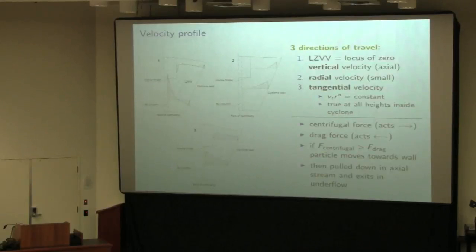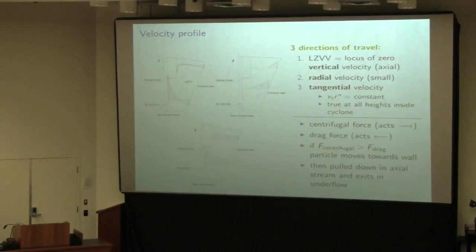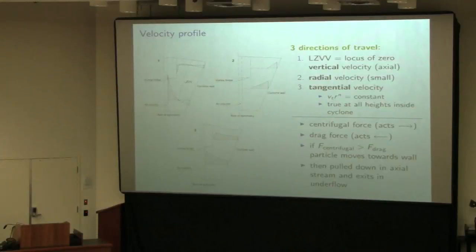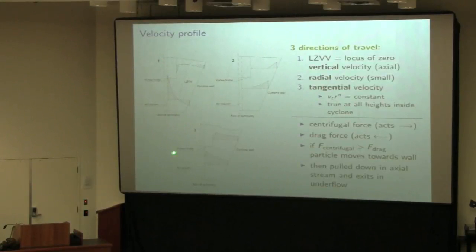Let's take a look at the velocity profiles. We have three types of velocities to consider: the vertical or axial velocity in the up-down direction, the radial velocity from center to outer wall, and the tangential velocity of the spiral. For the axial velocity, we have our greatest velocity in the upward direction at the center axis in the inner vortex, taking particles into the overflow. As we move toward the wall, particles are moving vertically downward toward the underflow. There is a profile crossing zero — that point of zero vertical velocity is called the LZVV.